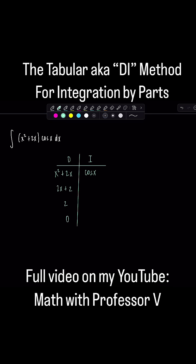Okay, so I took three derivatives. Now I need to anti-differentiate three times as well. So anti-derivative of cosine x,